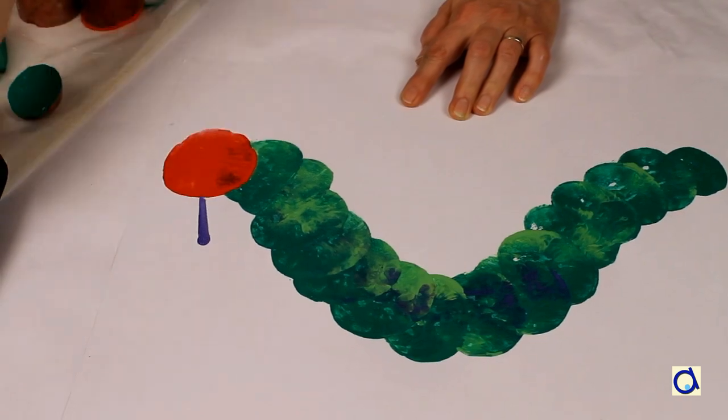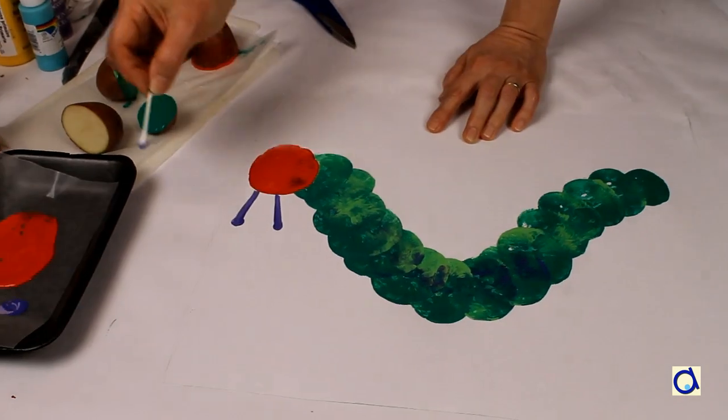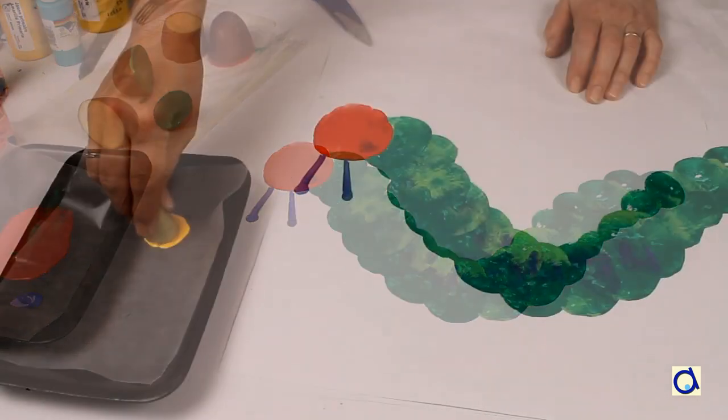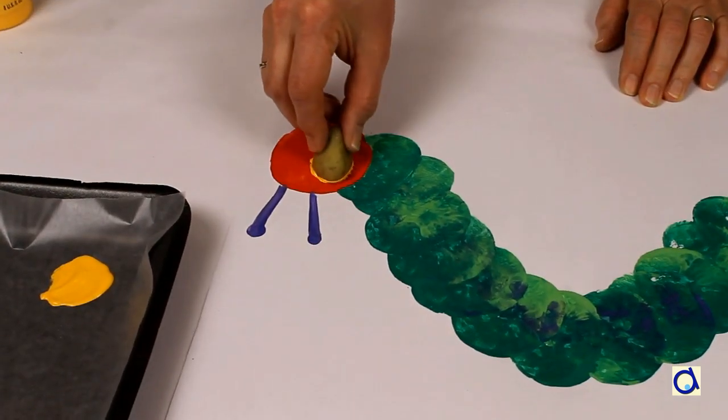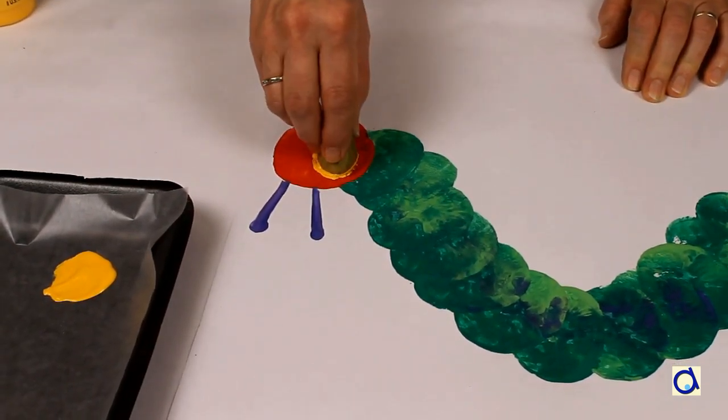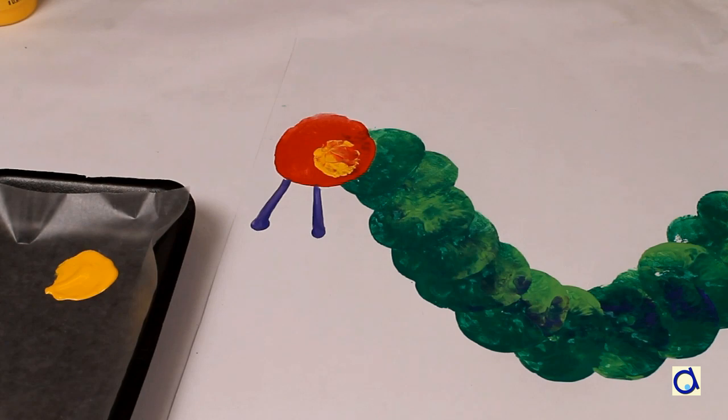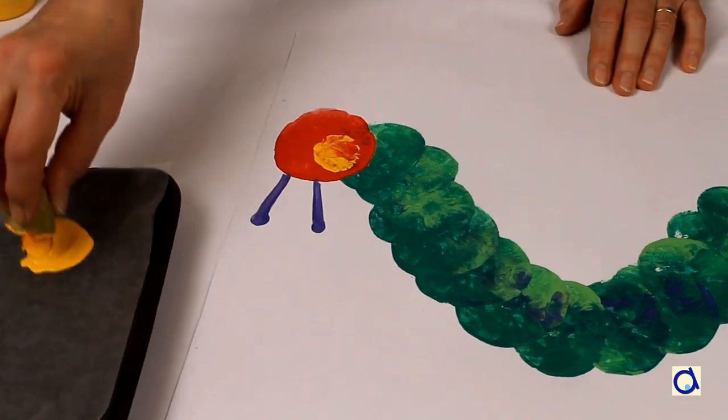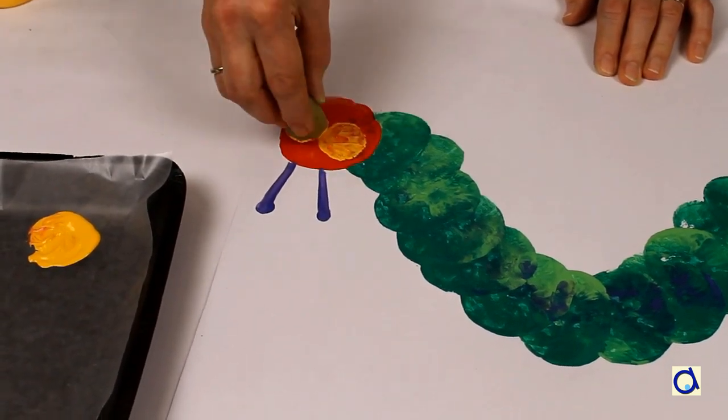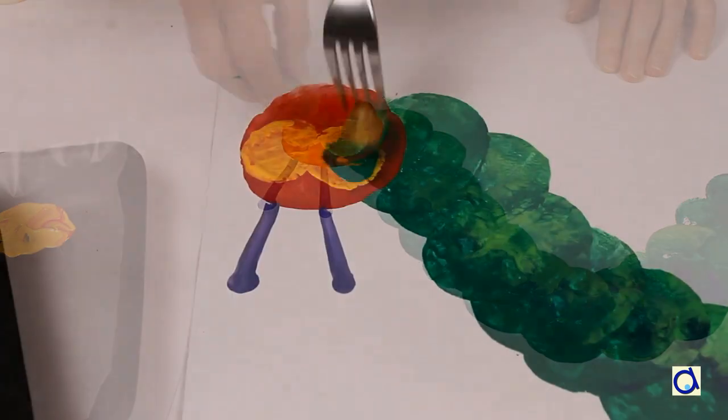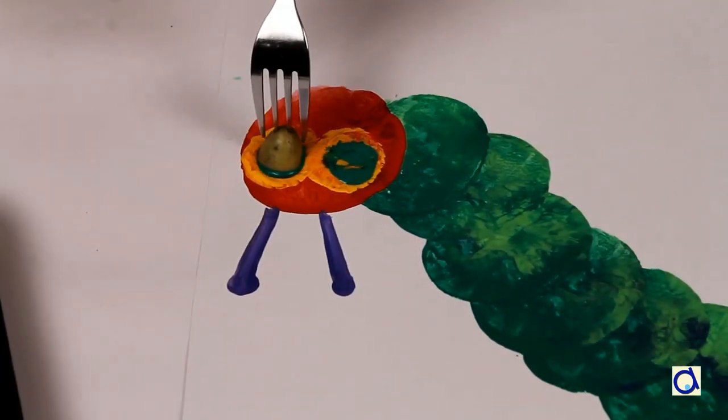Paint the antennas of the caterpillar with a cotton swab or a finger. Then take a small potato to represent the eye. Do not do like I did but let the paint of the head dry before printing the eyes so that the colours don't mix. Then print the inside of the eyes in green.